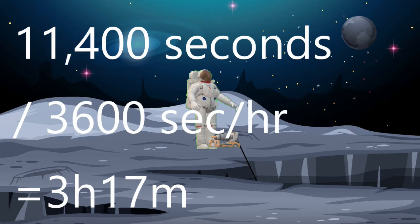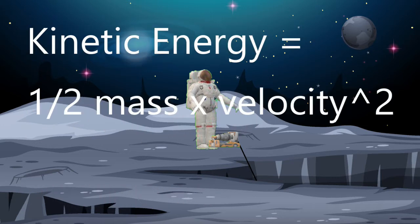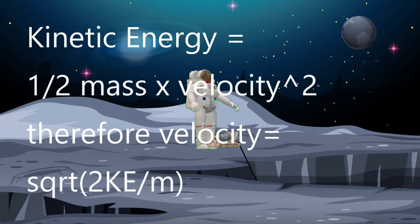The potential energy of the boulder was turned into electrical energy as it fell, using the cable and generator, which would have slowed the boulder's fall. Normally the boulder would have its potential energy converted into kinetic energy. If the cable snaps, the boulder hits with the same energy it started with — 1.33 megajoules — transferring this energy into the point of impact. We can calculate the velocity at impact using the formula for kinetic energy: kinetic energy equals one-half the mass times velocity squared, meaning velocity equals the square root of two times kinetic energy over mass. Since there is no air resistance on the moon, potential energy equals kinetic energy at impact.